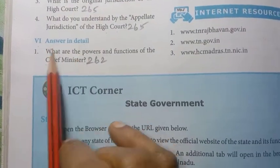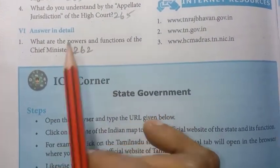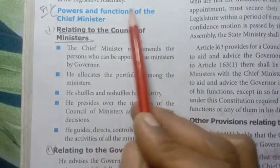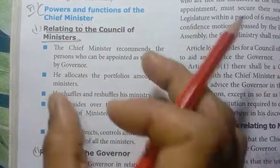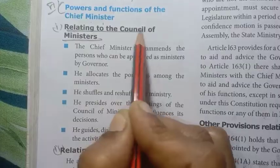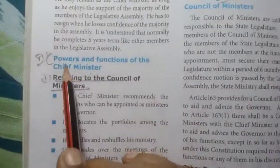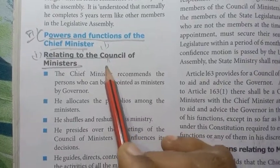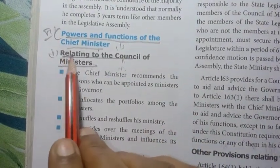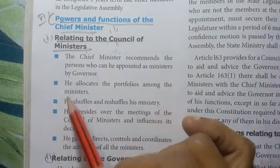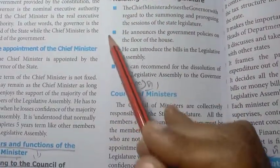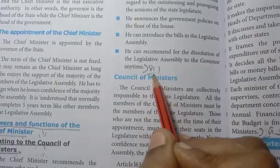Moving to Roman number six – answer in detail. First one: what are the powers and functions of the chief minister? Page number 262. There are three headings: relating to the council of ministers, relating to the governor, and relating to the state legislature. Under 'relating to the council of ministers' there are four points; under 'relating to the governor' there are five points; under 'relating to the state legislature' there are four points.